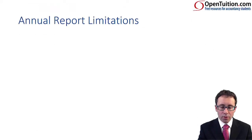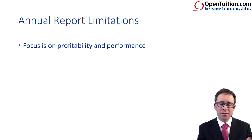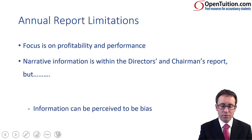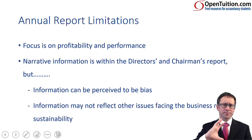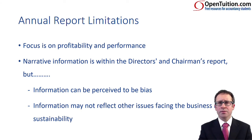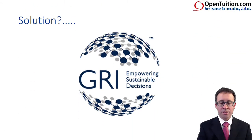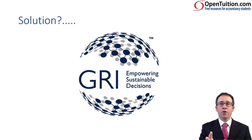The annual report is limited: the focus is on profitability and performance within the balance sheet and income statements. There is some narrative in the director's and chairman's reports, but it's pretty biased information, and there isn't really enough that reflects on the other issues facing the business in terms of its sustainability. So what's the solution? The Global Reporting Initiative — they're all about empowering sustainable decisions. Within that, they have set up a framework that gives you structure about how you go through and report how your business is thinking about sustainability.